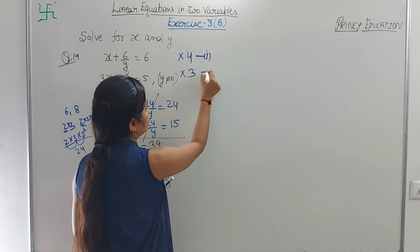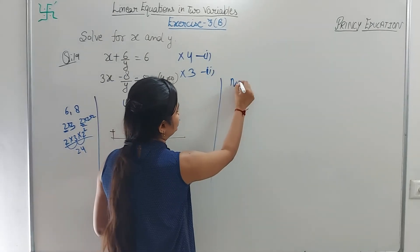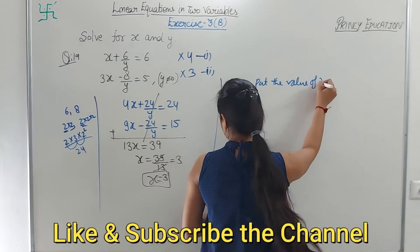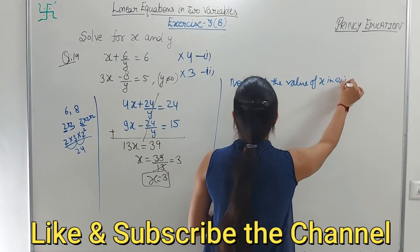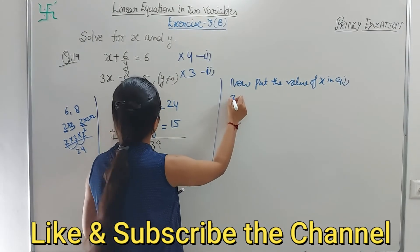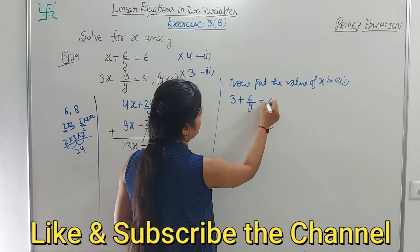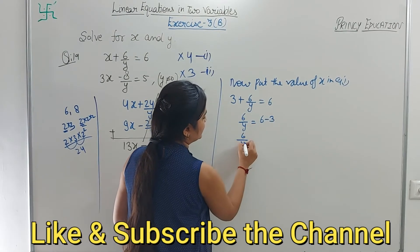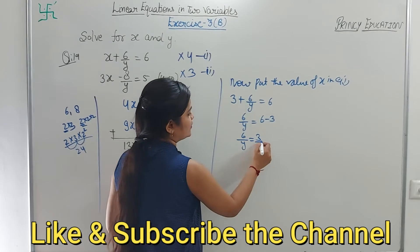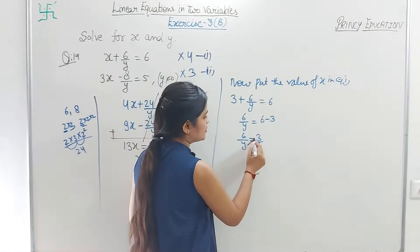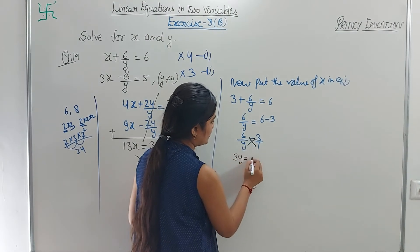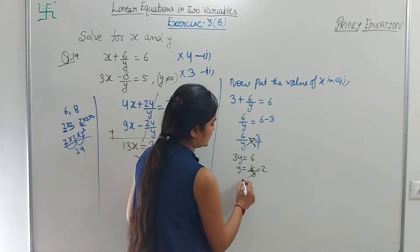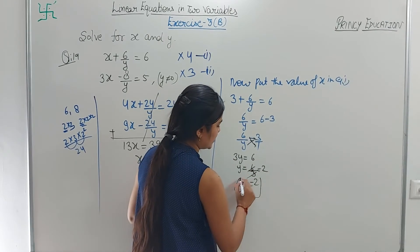Put x = 3 in equation 1: 3 + 6/y = 6. So 6/y = 6 - 3 = 3. Since the denominator of 3 is 1, cross multiply: 3y = 6. Therefore y = 6/3 = 2.